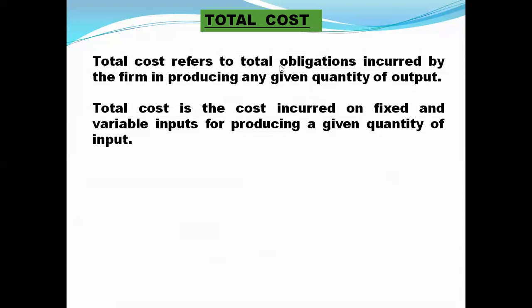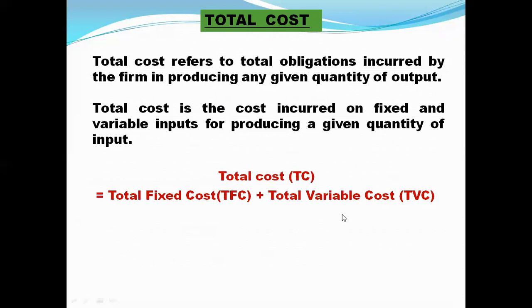Now we come to total cost. Total cost refers to total obligations incurred by the firm in producing any given quantity of output. It is the cost incurred on fixed and variable inputs. So total cost is the sum total of total fixed cost (TFC) and total variable cost (TVC), denoted as TC. TC changes because of change in TVC, because total fixed cost is fixed. You should keep this in mind.